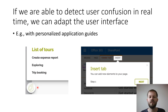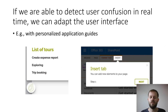As we can see here, when confusion is detected, there might be a pop-up showing the list of available guides for the user to choose from, or one of the predefined guides could start up automatically if the user is detected to be confused.